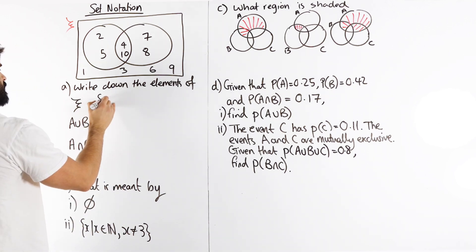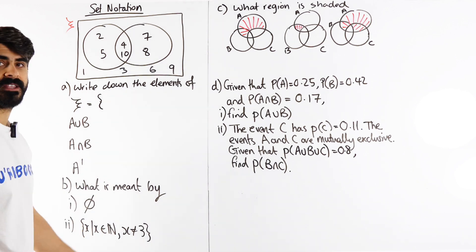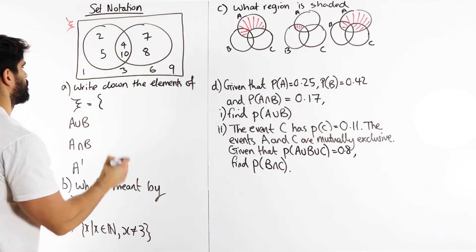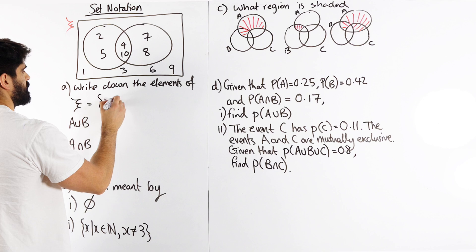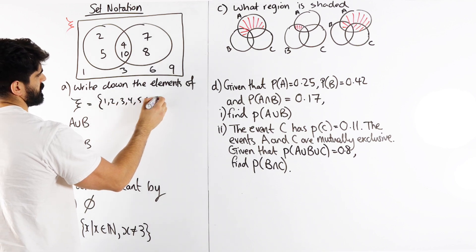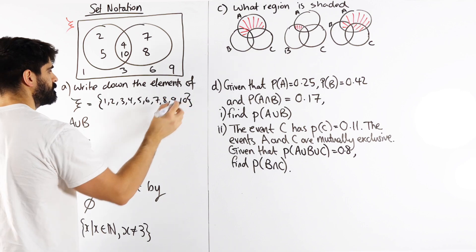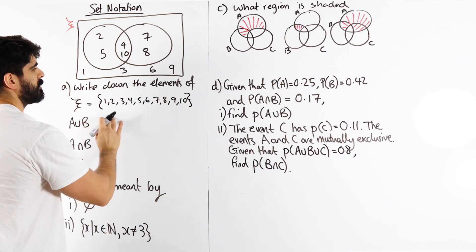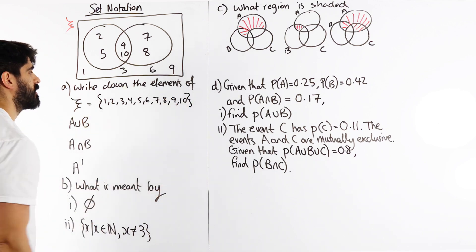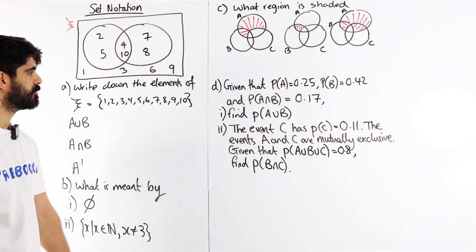We use curly brackets to represent the numbers contained within the set you're interested in. So we're going to write down 1, 2, 3, 4, 5, 6, 7, 8, 9, 10. One thing about your sets is it doesn't matter in which order you write the numbers — just make sure there are no duplicates.